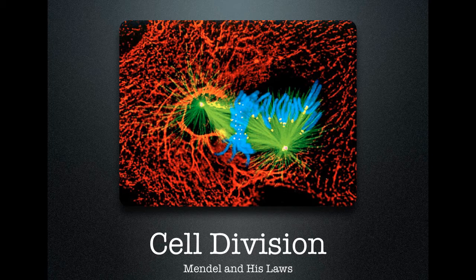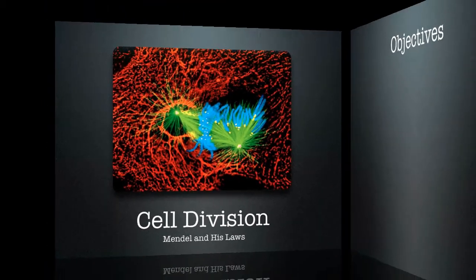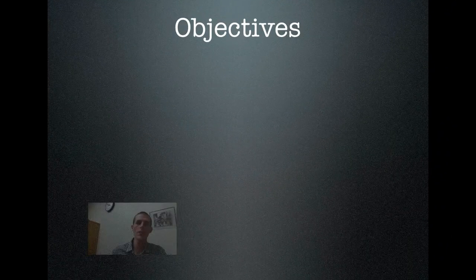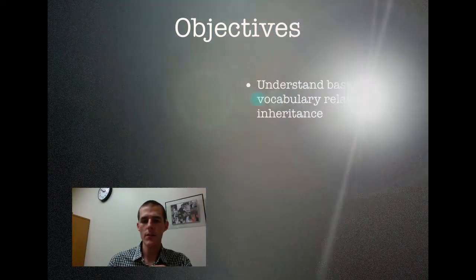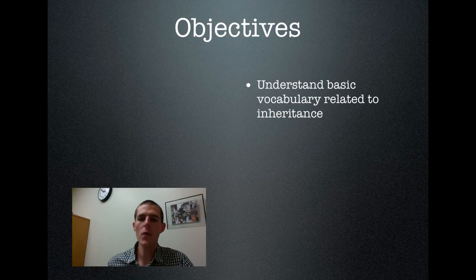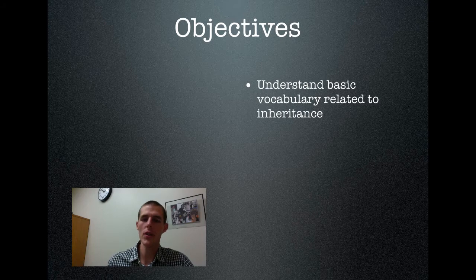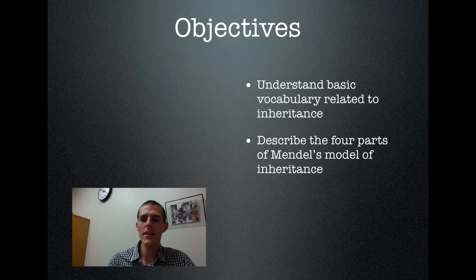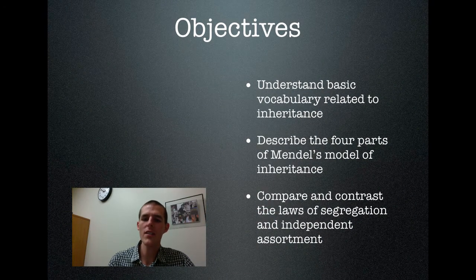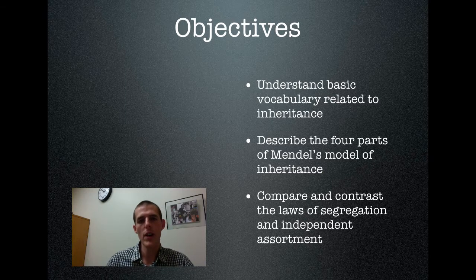Topic for today is going to be Mendel and his laws, and just like always we're going to start out with our objectives so that you know what you need to know by the end of our little time together. First thing: understand basic vocabulary related to inheritance. Second thing: describe the four parts of Mendel's model of inheritance. And finally, compare and contrast the laws of segregation and independent assortment. We're also going to throw some stuff about Punnett squares in there. So without further ado, let's go ahead and get going.